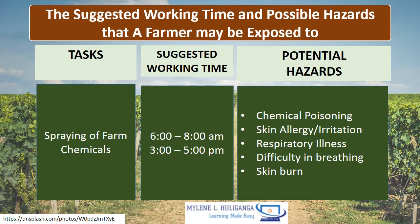Irrigating the field (daytime). Suggested working time is 7 a.m. to 10 a.m. and 3 p.m. to 5 p.m. Potential hazards are chemical poisoning, skin allergy or irritation, respiratory illness, difficulty in breathing, and skin burn.